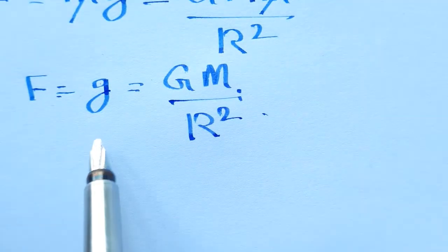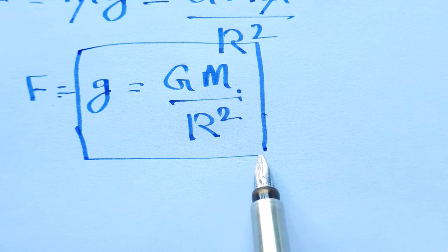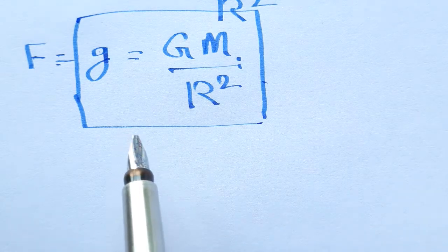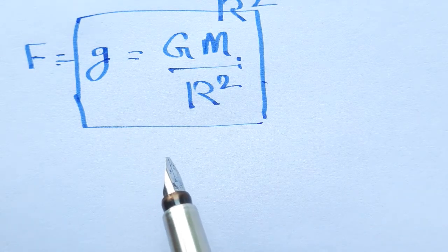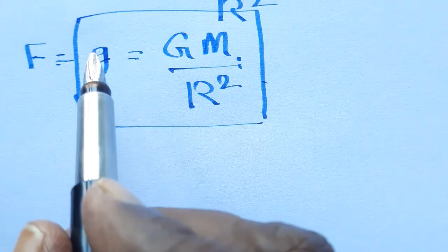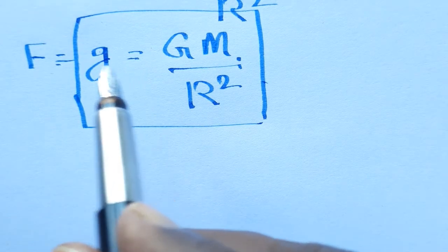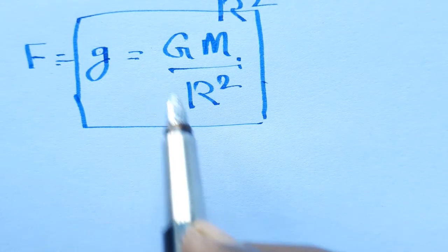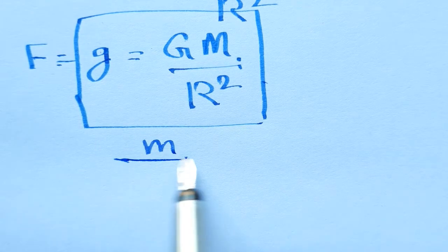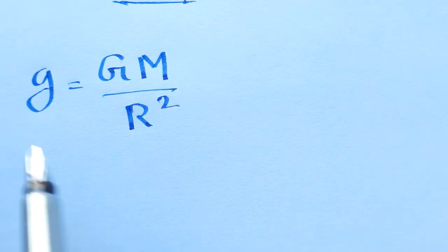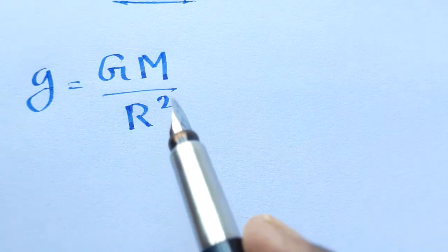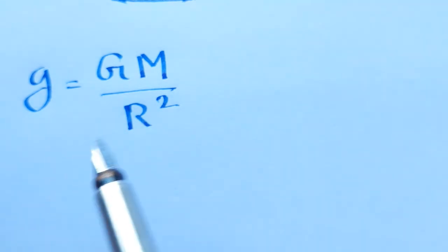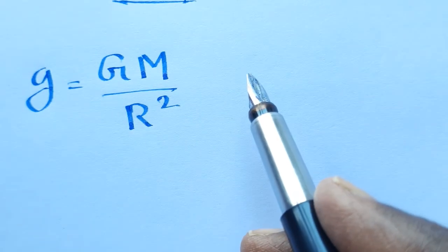From this equation we noted that gravitational force acting on any object is independent of the mass of the body, small m. So this equation shows that g is independent of the mass of anybody, m.